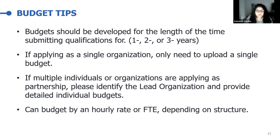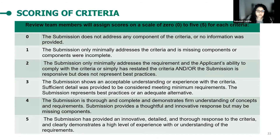Moving into scoring of the criteria — this is how the review panel is going to look at and score qualifications. Each section will be scored from zero to five. Qualifications rated a five would need to provide an innovative, detailed, thorough response that clearly demonstrates a high level of experience with and understanding of the requirements. A submission might be rated a three if it shows an acceptable understanding or experience with the criteria and represents best practices or an adequate alternative. Submissions may be scored at zero if they do not address any component of the criteria or no information was provided.